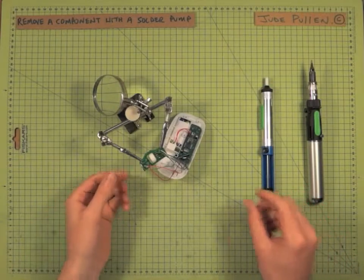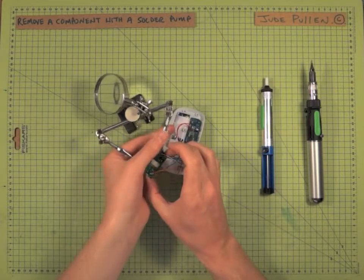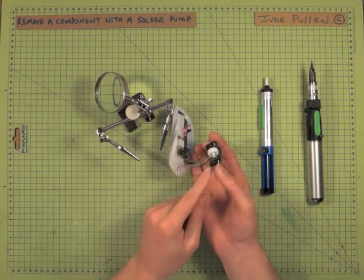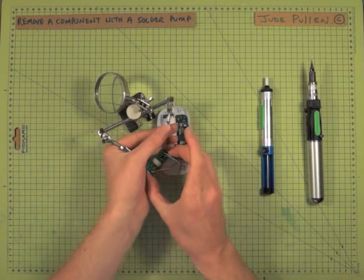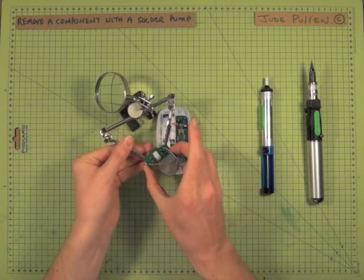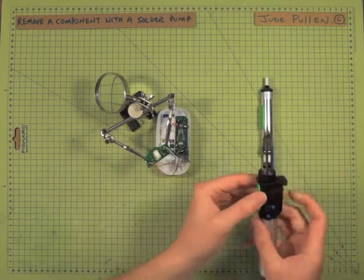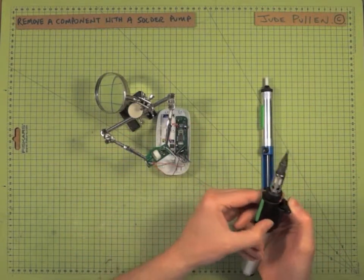Okay, so this is just a quick tip on how you can remove a solder joint. Let's say we want to remove a micro switch from a PCB. I've got it clamped in here like so and fire up the soldering iron.